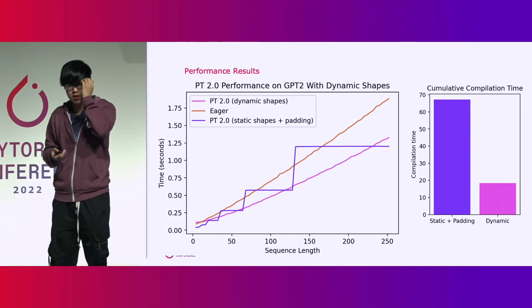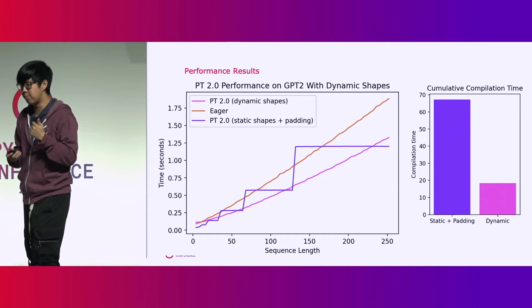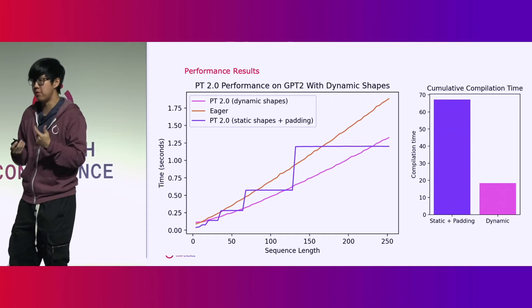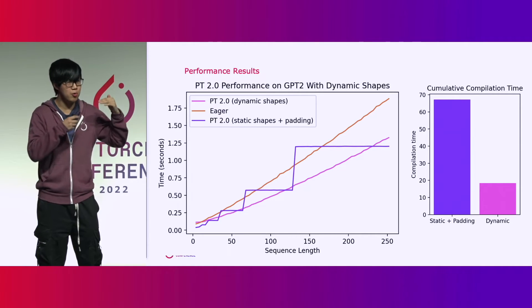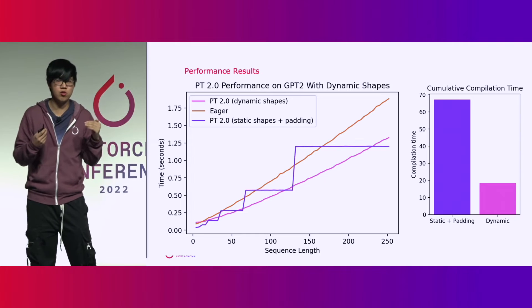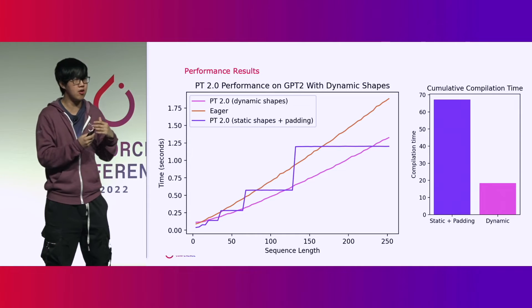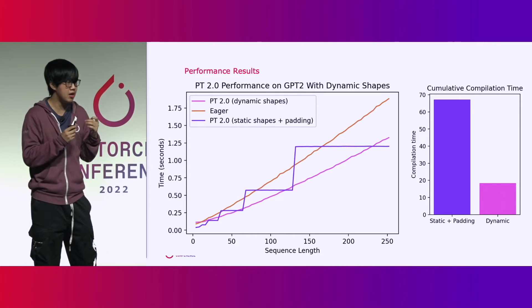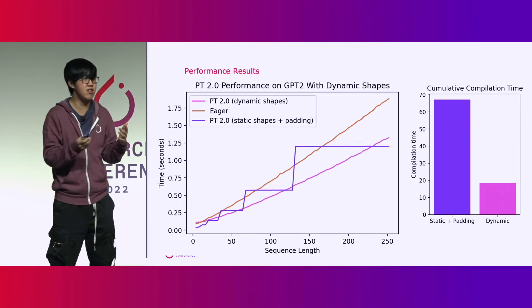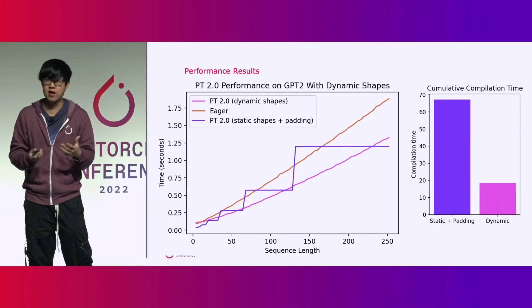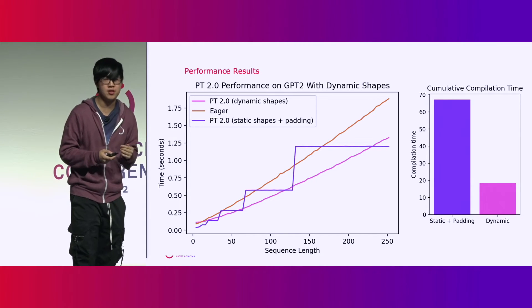Another nice benefit of supporting dynamic shapes is reducing compilation time. Although padding to the nearest power of two minimizes the number of compiles, you still need to compile about five or six times for static shapes in this example. Dynamic shapes only need to compile once, resulting in significantly reduced compilation time when needing to support these kinds of dynamic shapes.